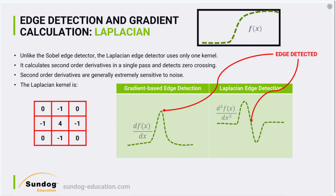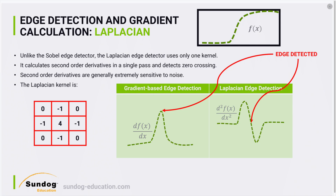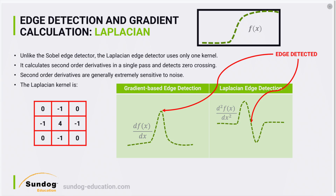The next edge detection algorithm we'll cover is called the Laplacian. It's a second order differentiation. The Laplacian edge detector uses just one kernel — a kernel with four in the center, minus one surrounding, and zeros in the corners — to compute the second order derivative of the image. The main problem with the Laplacian is that these second order derivatives are extremely noisy, because you're differentiating the image twice.